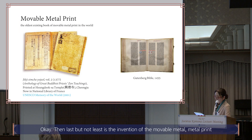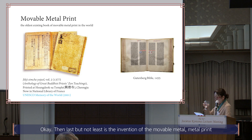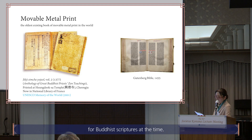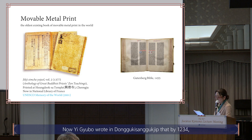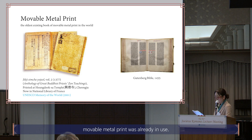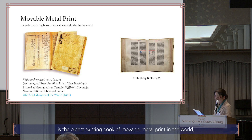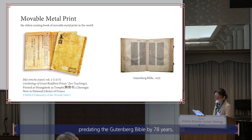Last but not least is the invention of the movable metal print, which appears to be the culmination of widespread demand for Buddhist scriptures at the time. Yigubo wrote in Dongguk Isanggukjip that by 1234, movable metal print was already in use. The anthology of great Buddhist priest Zen teachings dated to 1377 is the oldest existing book of movable metal print in the world, predating the Gutenberg Bible by 78 years.